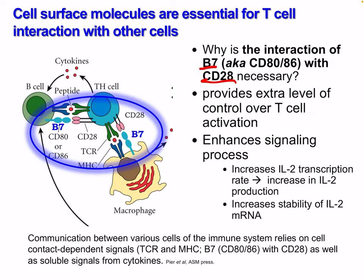Why is the B7-CD28 interaction necessary? It provides an extra level of control over T cell activation, but also enhances the signaling process. It increases IL-2 transcription rate, increases IL-2 production, and increases the stability of IL-2 mRNA — so it's not just a self-preservation mechanism, it also improves our response.